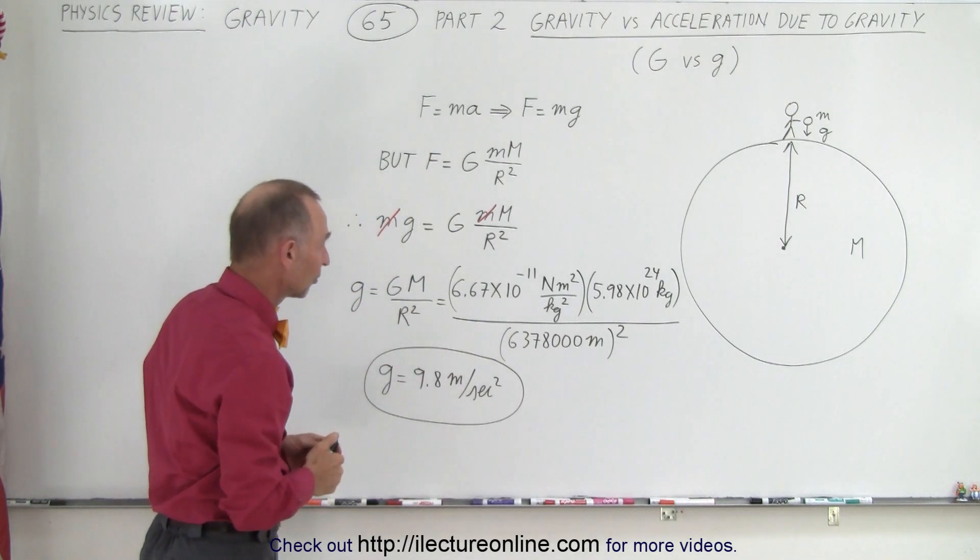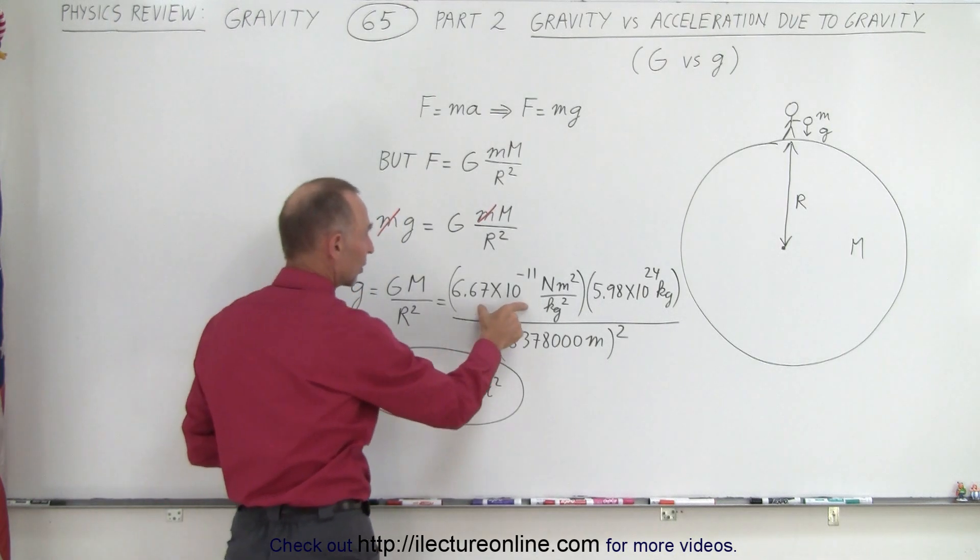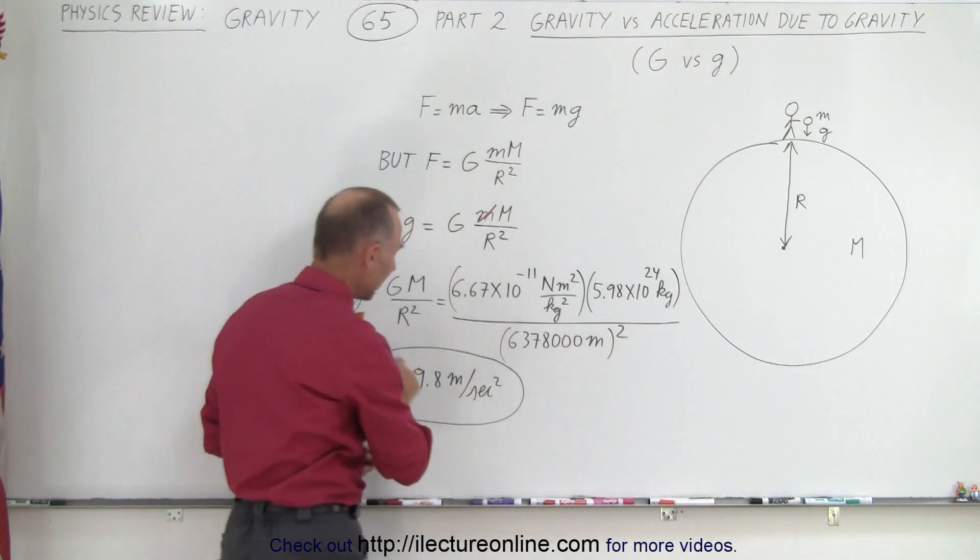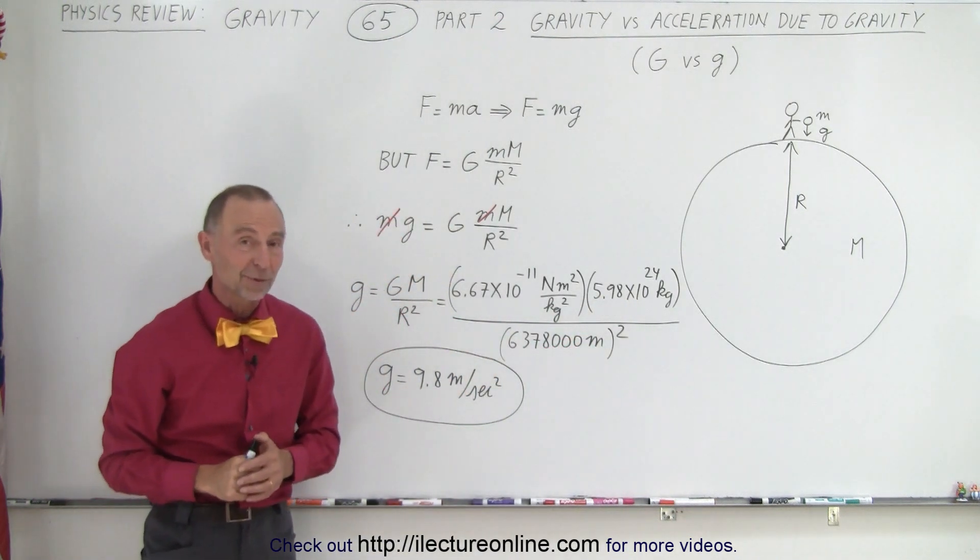You plug in the numbers, knowing the gravitational constant, the mass of the Earth, the radius of the Earth in meters, and out comes 9.8 meters per second squared.